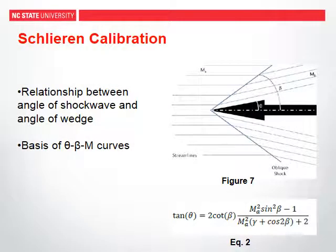Using the image projected by the Schlieren system, it is possible to calculate the Mach number of the flow. The angle formed by the oblique shock is a function of the angle of the wedge and the Mach number upstream of the shock. The relationship between the shock angle, the Mach number, and the wedge angle is given by equation 2. This relationship is used to plot a theta-beta-Mach curve, from which the Mach number can be determined for a given wedge.